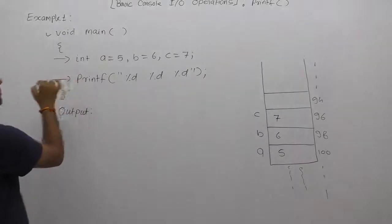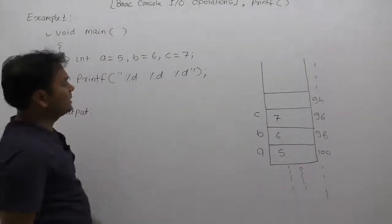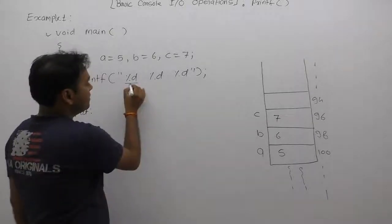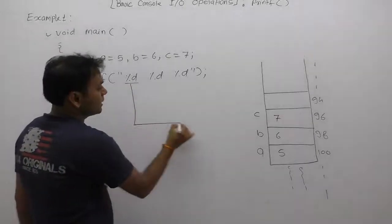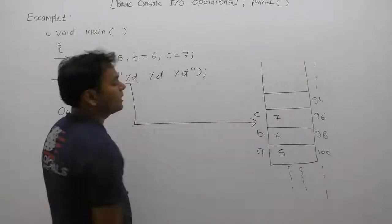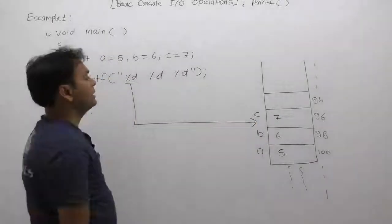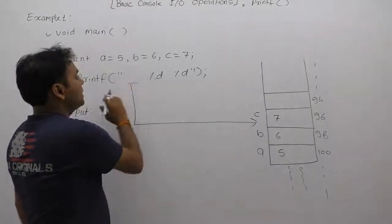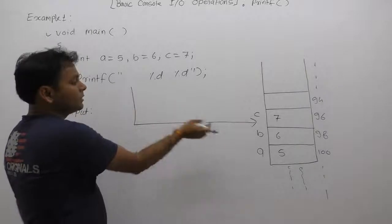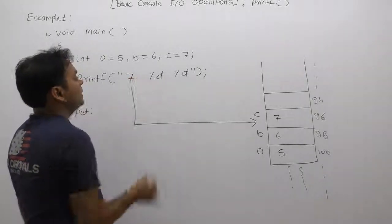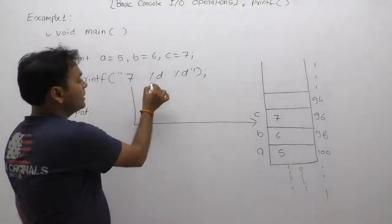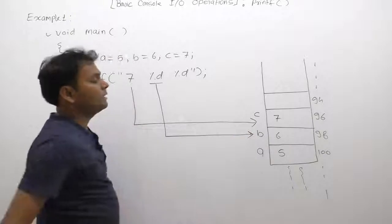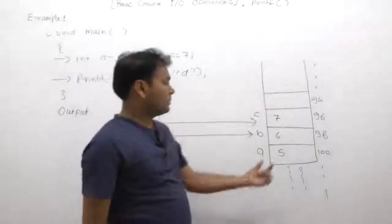What happens in the printf function in such cases? First, percent d is replaced by first top element of the stack. According to stack diagram, top element is c and value of c is 7. Therefore percent d automatically replaced by top value as 7. Next percent d is replaced by next corresponding top element, next top element is b which is assigned by 6.